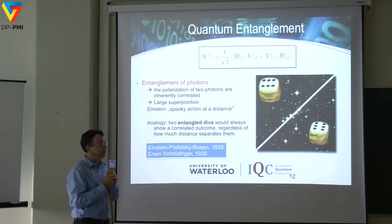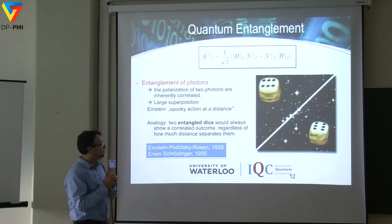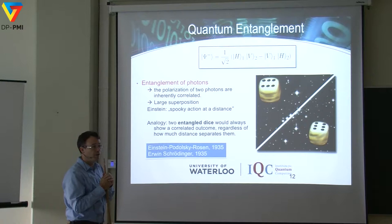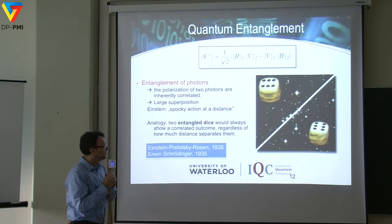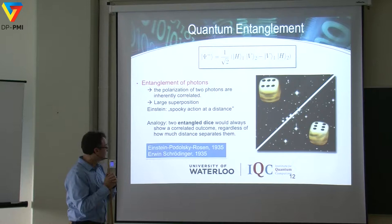Albert Einstein himself noticed this feature of quantum mechanics. In the famous 1935 Einstein-Podolsky-Rosen paper — the EPR paradox — they noticed this is a consequence of quantum formalism. Einstein called it 'spooky action at a distance.' He used it as an example of why he thought quantum mechanics was incomplete. Today, however, with all the experimental evidence we have, it's quite the opposite — quantum mechanics works really well and follows this kind of strange behavior.